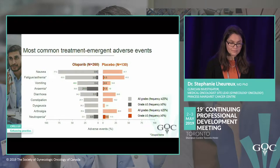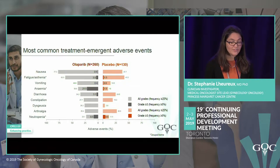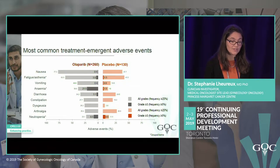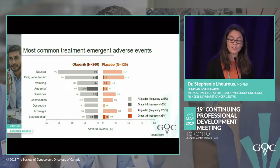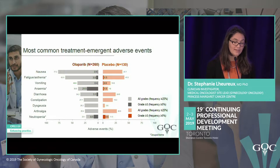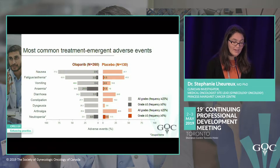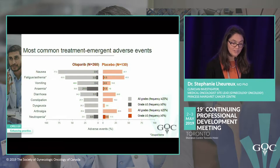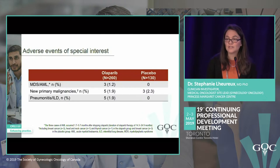Regarding side effects in the first-line maintenance — which lasts two years — they were manageable. The main side effects were nausea, which was well controlled, with no grade 3 vomiting. There were some bowel changes with constipation or diarrhea, and some grade 3 neutropenia and anemia that were easy to manage.